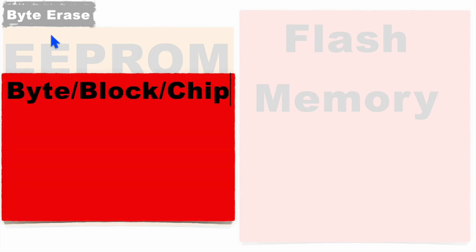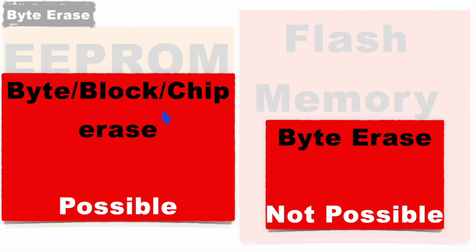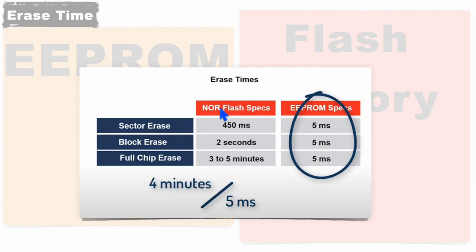In EEPROM you can erase a single byte as well. Actually in EEPROM you can have byte-level erase, block-level erase, sector-level erase, and chip-level erase. In flash memory, you cannot perform byte-level erase — you can only erase at block level, sector level, or chip level.